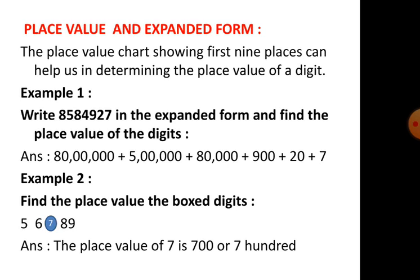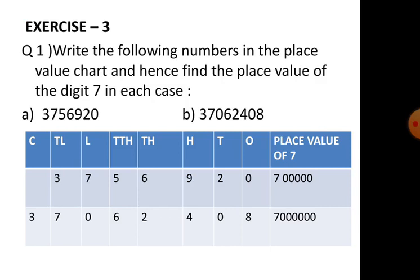After writing the digits we will place zeros appropriately. For example two: find the place value of the boxed digit. The digit is in the number 56,789. The ones, tens, hundreds, thousands, ten thousands — the boxed digit is seven, which is in the hundreds place. So the place value of seven will be seven hundred.